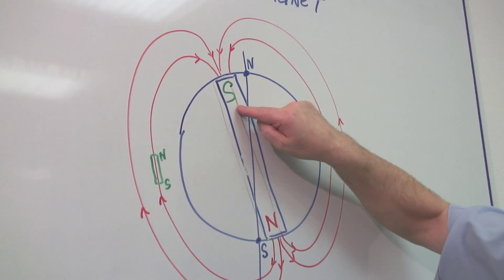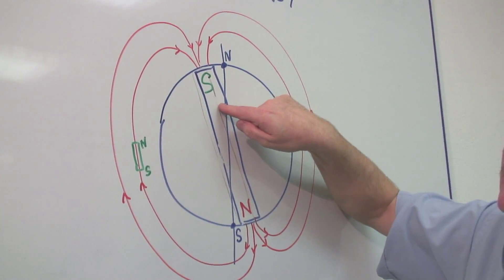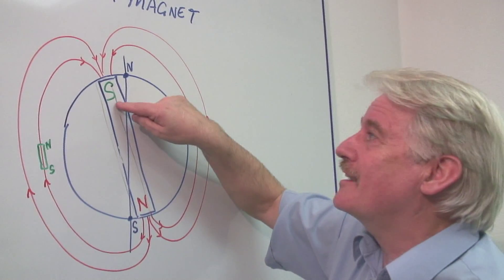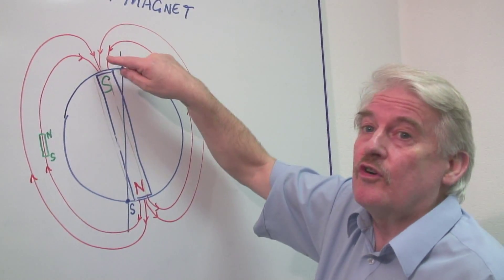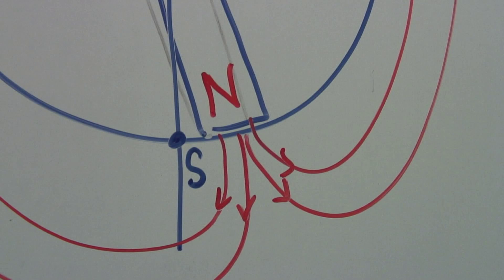Which means that the earth is actually a south pole at the north, a south magnetic pole at the north. This is the magnetic pole which is not the same as the geographic pole. It's about eight degrees different.